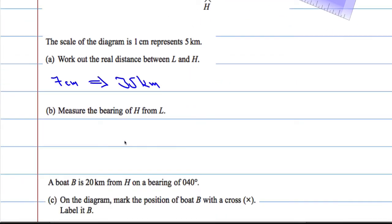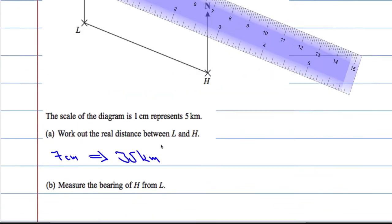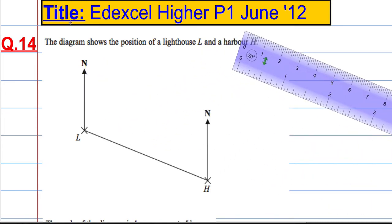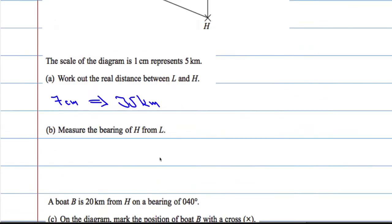So 35km. Measure the bearing of H from L. So let's just move this to the side for a moment. Measure the bearing so we need a protractor. And this is where people get tripped up a lot. Of H from L. So we're measuring from L.